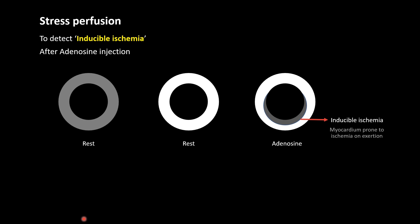One of the main applications of perfusion is to detect inducible ischemia through stress perfusion. At rest, the entire myocardium is enhancing, and we might think the myocardium is normal. But once we induce stress by injecting adenosine and then perform perfusion imaging, there may be a non-enhancing region. This non-enhancing area appearing after inducing stress is called inducible ischemia — the myocardium that is prone to infarct if there is significant exertion.